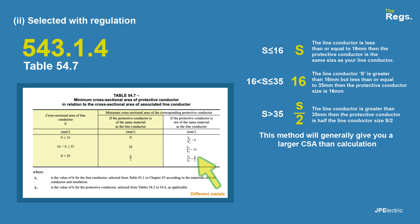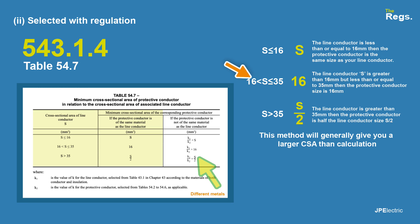The other method of selecting your protective conductor is using table 54.7. The regulation is 543.1.4, and this gives you the minimum cross-sectional area of the protective conductor in relation to the cross-sectional area of the line conductor. If the line conductor is less than or equal to 16mm², the protective conductor is the same size. If it's greater than 16mm² but less than or equal to 35mm², you use a 16mm² protective conductor. And if the line conductor is greater than 35mm², the protective conductor is half the line conductor size. This method generally gives a larger cross-sectional area than calculation, and it errs on the side of caution.